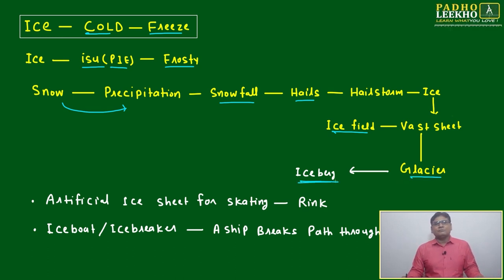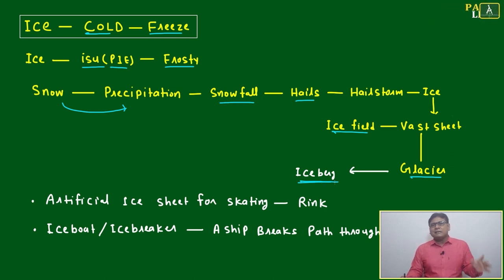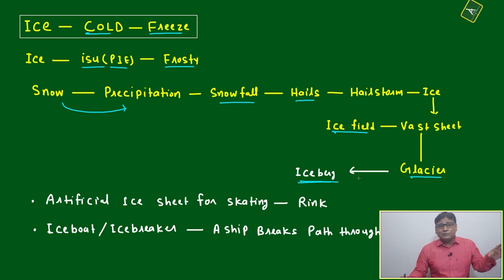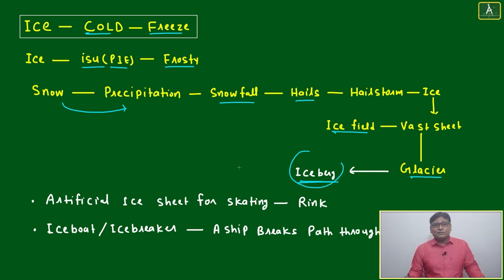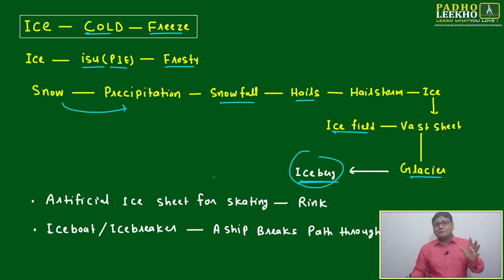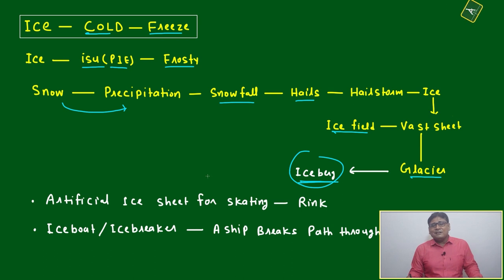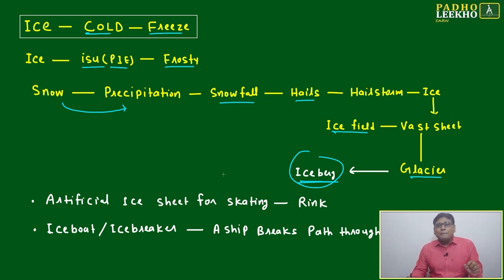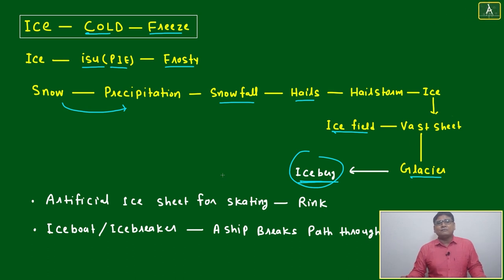This vast sheet of ice can be in the form of a glacier or an iceberg. If you remember the Titanic movie, that ship collided with an iceberg. An iceberg is a broken part — small or big — of ice that has broken off from a glacier. A glacier is a further bigger part.